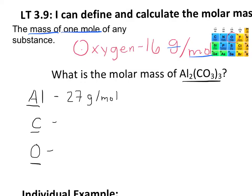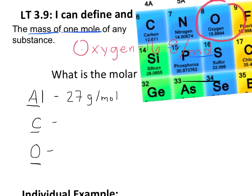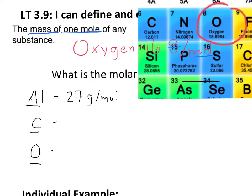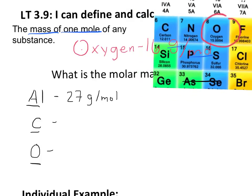I've already listed the molar mass for aluminum, which is in the periodic table as 27 grams per mole. If I want to find the molar mass of carbon, I look on the periodic table, and I see that it has a mass of 12.011.